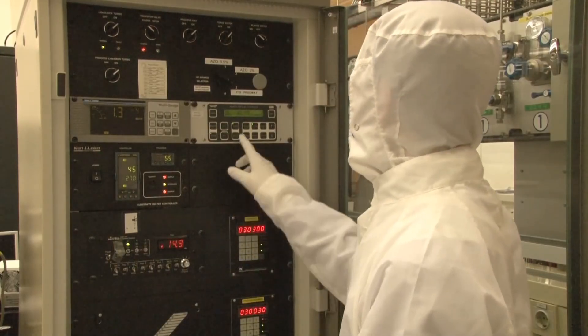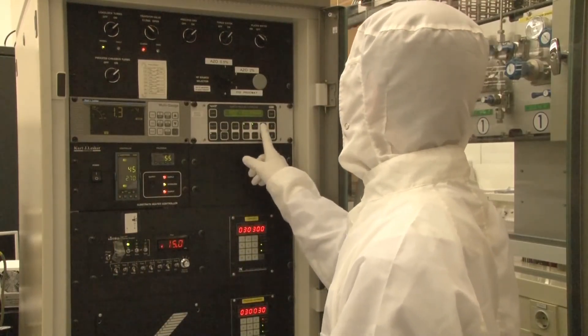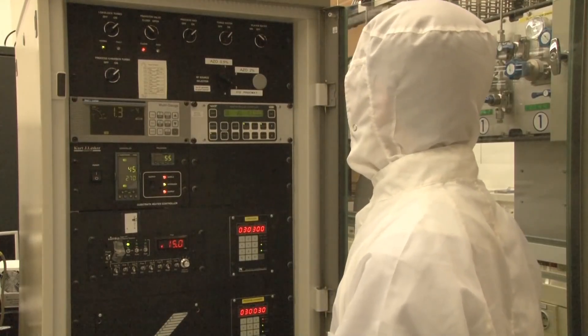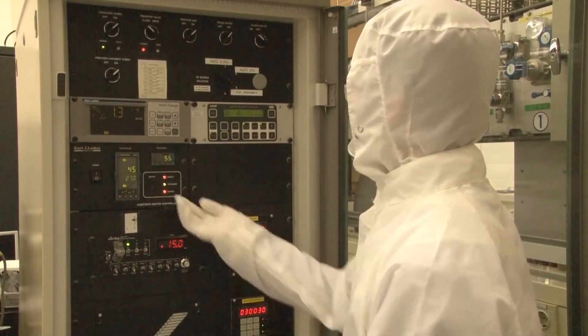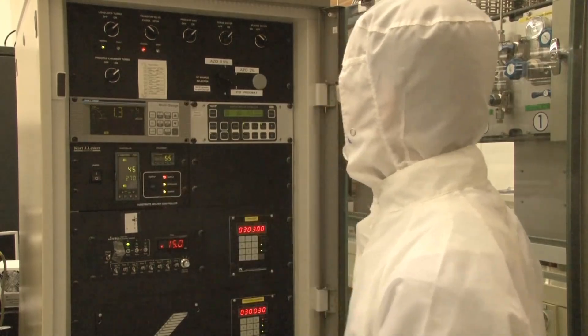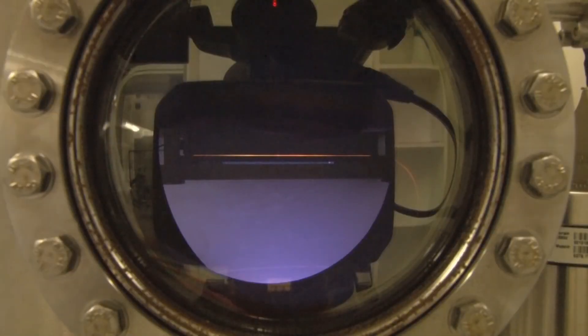During sputtering, the zinc oxide target is bombarded using an ionized noble gas like argon. The generated aluminum zinc oxide species are sputtered into the chamber and deposited onto the substrate. Here you see the sputtering plasma.